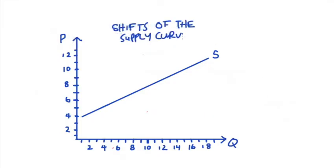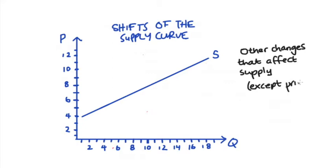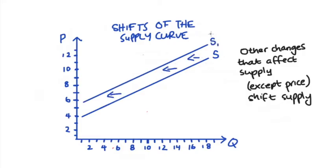So we can contrast this with shifting the supply curve which we're going to do if anything else changes apart from the price that affects the supply of a product. For instance, we can have a decrease in supply that we present as a shift to the left, say from S to S1.